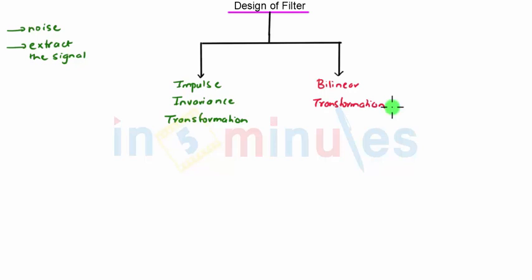Now we will study these two methods. Let us see the first method, that is impulse invariance transformation. In impulse invariant transformation, it is necessary to develop an IIR transfer function whose impulse response is the sampled version of impulse response of the analog filter. The main idea behind this technique is to preserve the frequency response of the filter.